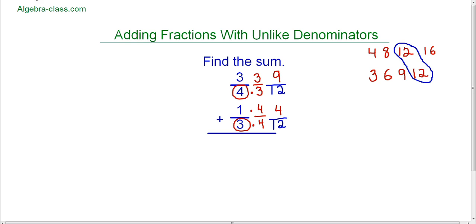And now I can go ahead and I can add. I'm going to add nine and four my numerators. My denominator always stays the same. Whatever your common denominator is that's going to be the denominator in your answer. And then I'm going to add the numerators. So nine plus four is thirteen. So my answer to this problem, find the sum of three-fourths plus one-third is thirteen-twelfths.